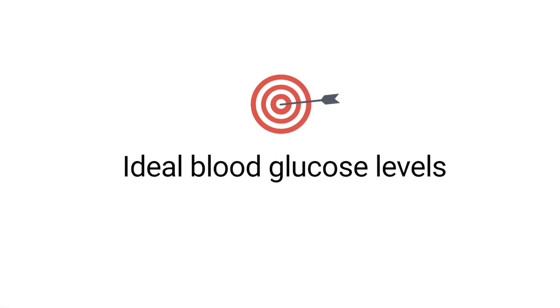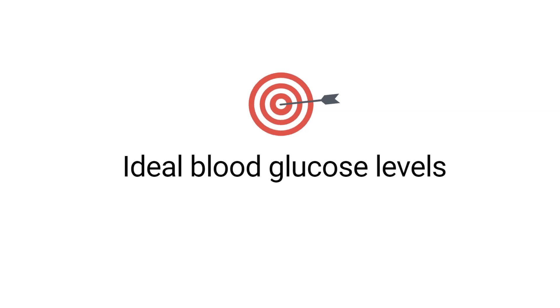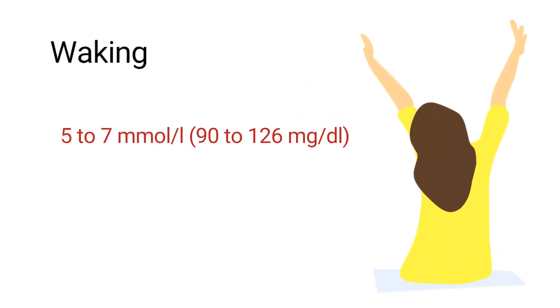In this video we will discuss ideal blood glucose targets for patients with diabetes. On waking, blood glucose levels should be 5 to 7 millimoles per liter or 90 to 126 milligrams per deciliter.